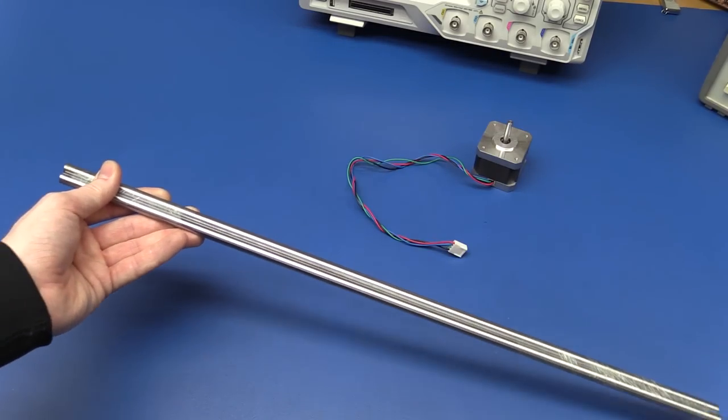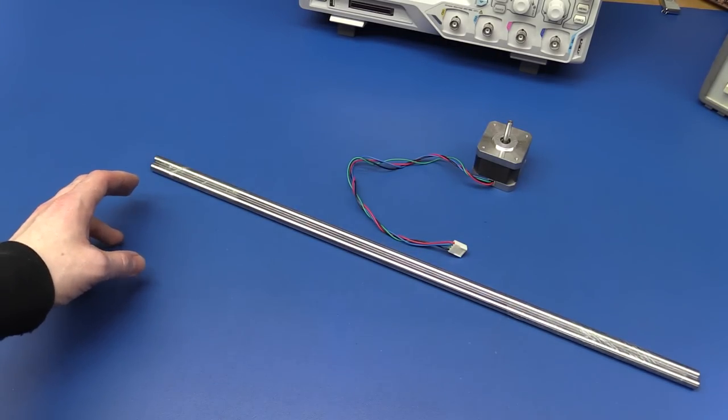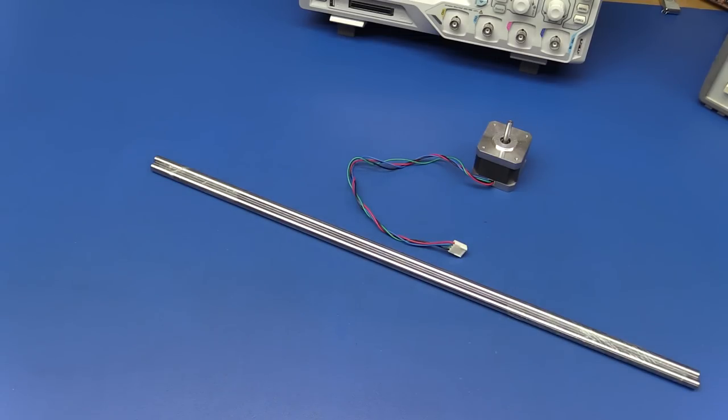So I bought my linear rails at 50 centimeters each, and I am hoping to get around 35 to 40 centimeters of print head travel. Most likely 35 but we will have to see.